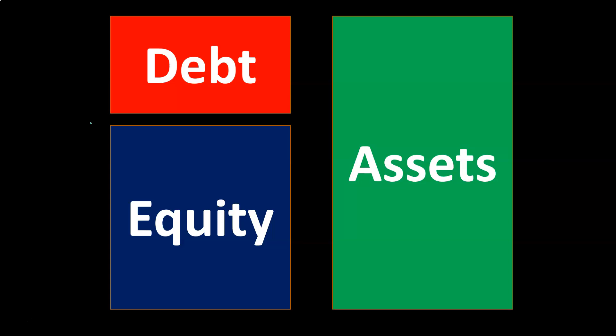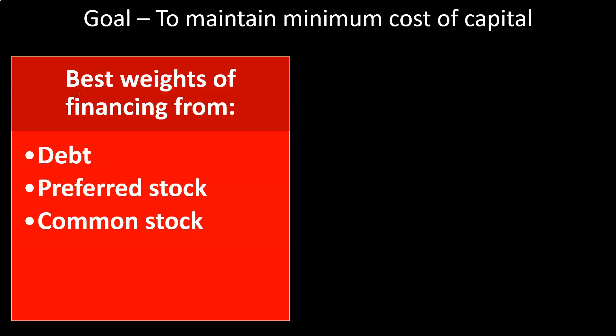So the question is: how much debt should be taken on? Equity is usually more expensive than debt, but as debt increases, risk increases as well. Our goal is to maintain a minimum cost of capital by financing between the options of debt, preferred stock, and common stock — finding that optimal level, which is what the weighted average cost of capital calculation helps us achieve.